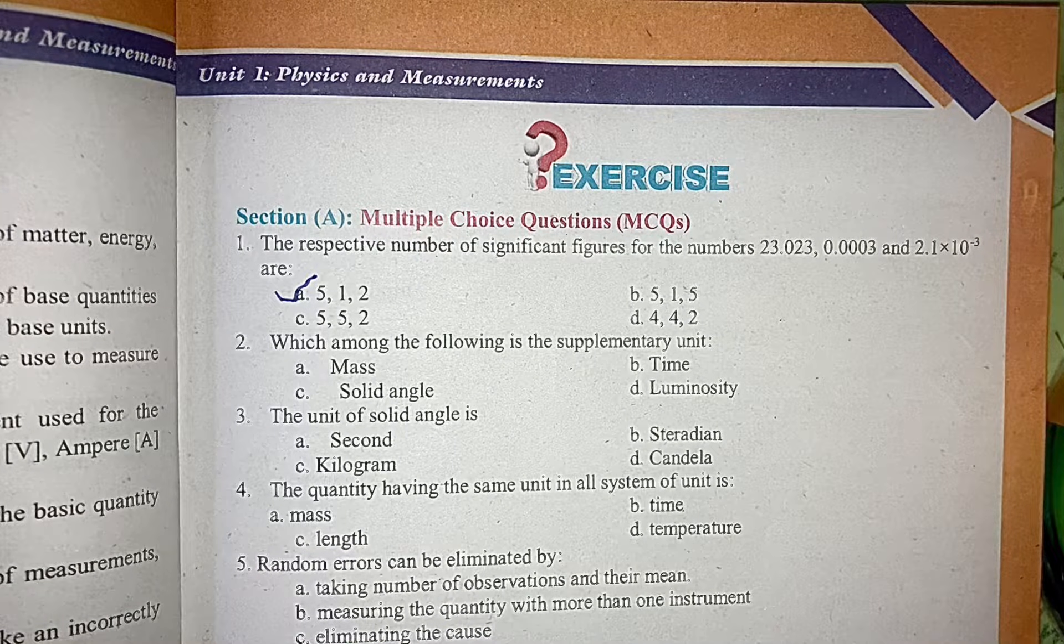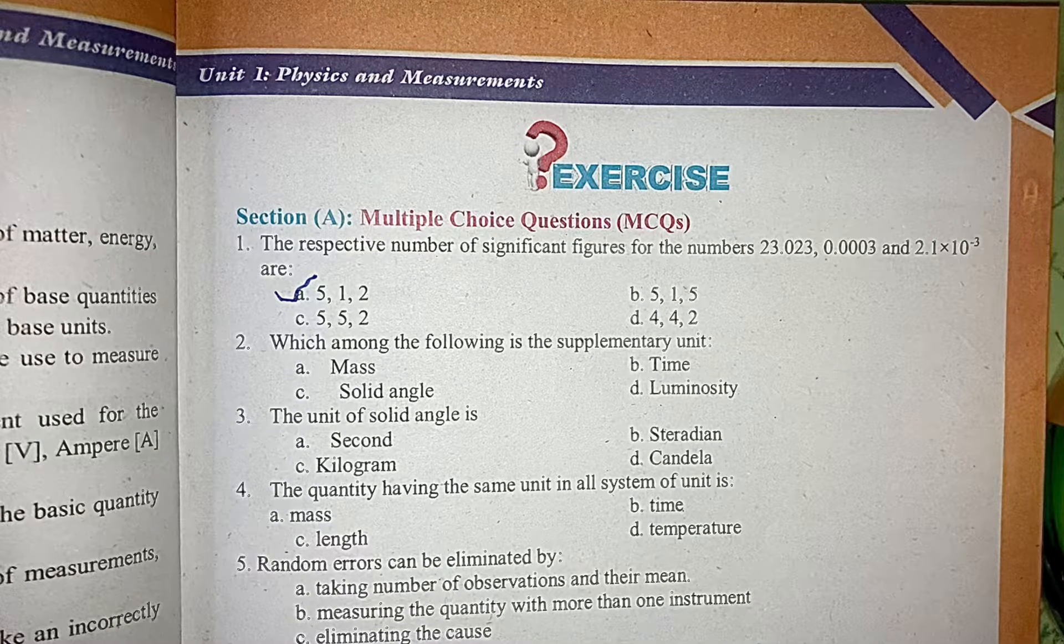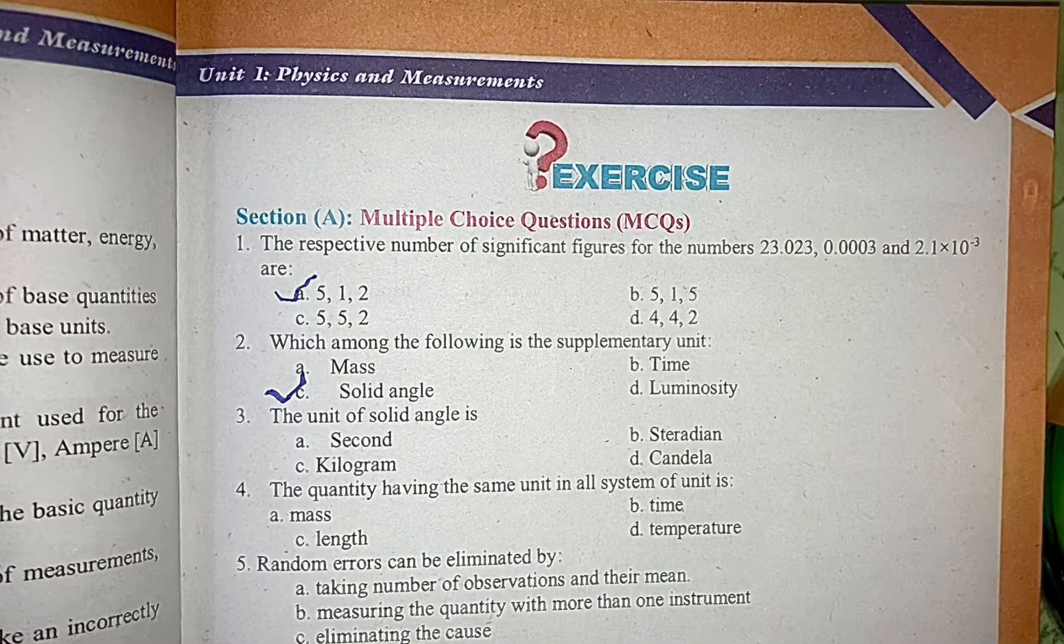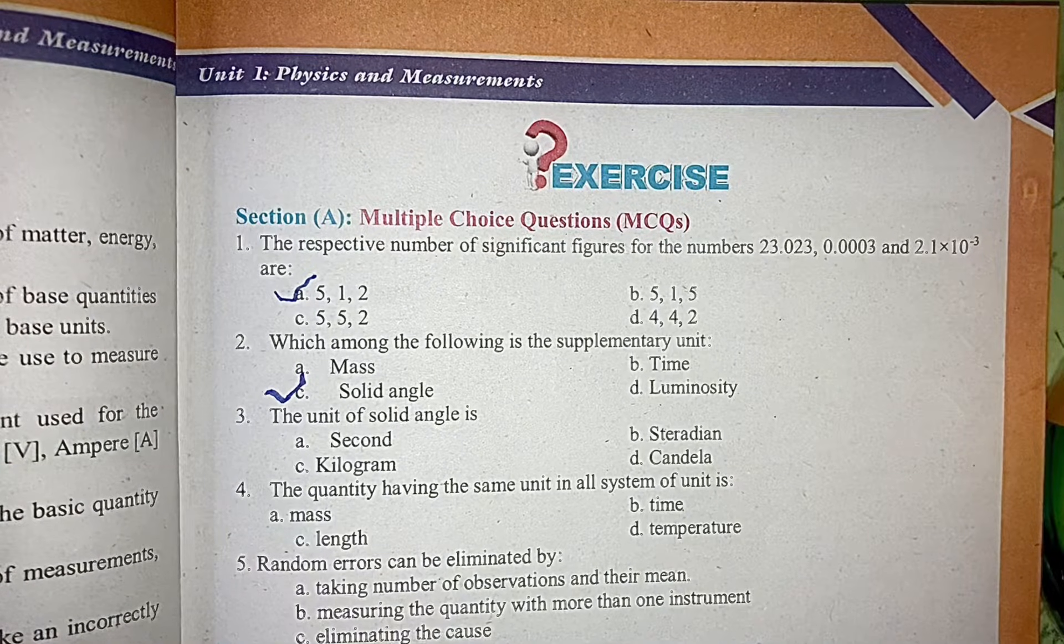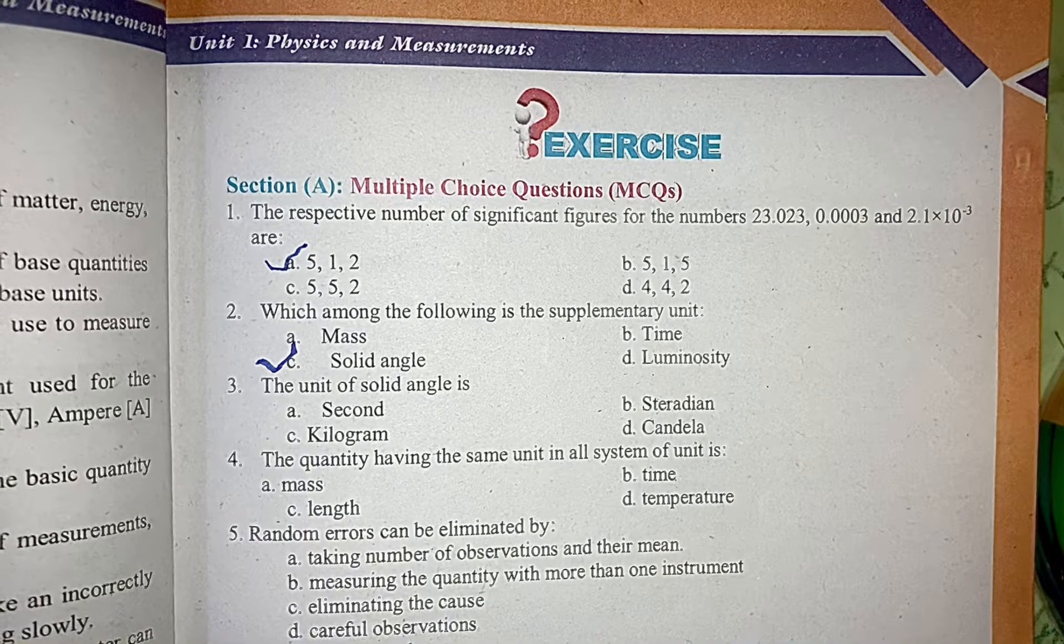The correct option is option number c: solid angle. Now there is MCQ number 3: the unit of solid angle is option number b: steradian.